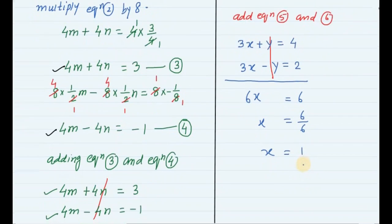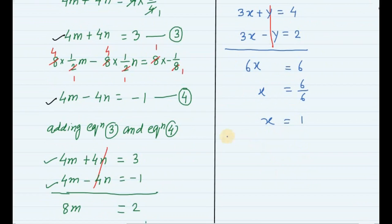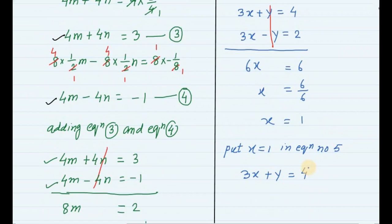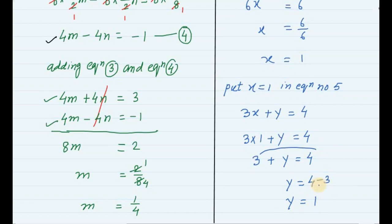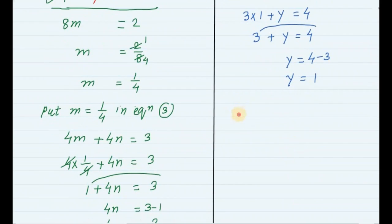Now put x equal to 1 in equation number 5. Equation 5 is 3x plus y equals 4. Substituting: 3 into 1 plus y equals 4, giving 3 plus y equals 4. Therefore y equals 4 minus 3, which is 1. So x equals 1 and y equals 1.